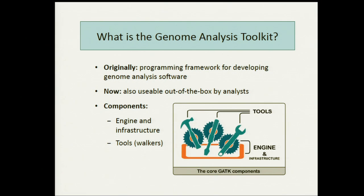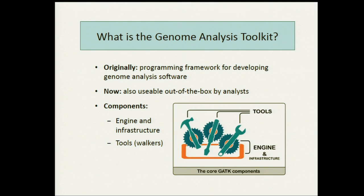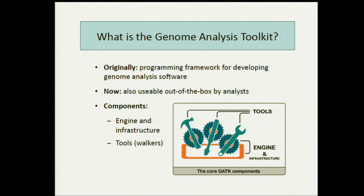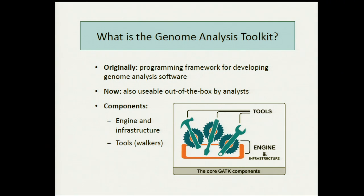Some tools have different properties. For example, if you want to do SNP calling using the unified genotyper, you want to see one locus at a time — you work on one locus and then move to the next. The engine is responsible for providing the information that the tool needs in order to work. Other tools might want to see a whole read each time, so the engine provides a whole read. The engine runs everything and provides the data, and the tools do the actual processing and work.